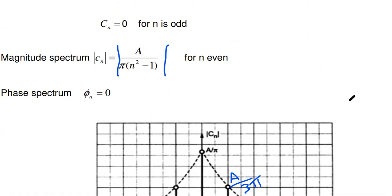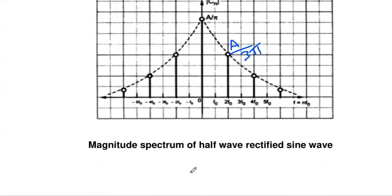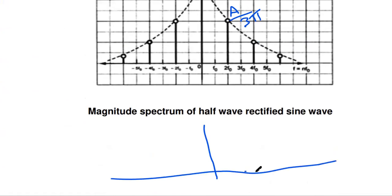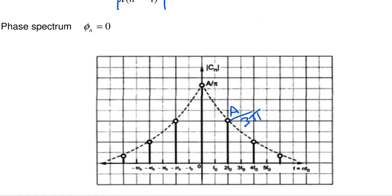For any value of n, the phase spectrum is 0. This is the magnitude spectrum and this is the phase (angle) spectrum. Thanks for watching my channel — please subscribe for more videos and keep watching. Thank you.